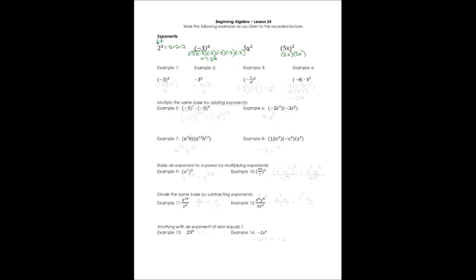Look at example 1: inside parentheses I have negative 3, and it's raised to the power of 2 — that's negative 3 multiplied two times. Two negatives give me a positive 9. Example 2 is different: the negative is not included in parentheses, so only 3 is raised to the power of 2. The negative is simply out in front, so we say negative 3 times 3, which gives us negative 9.